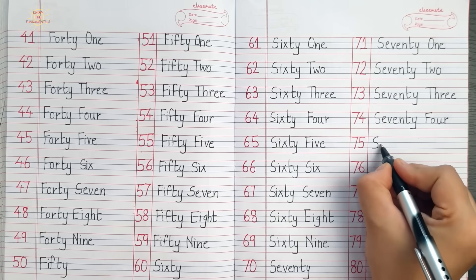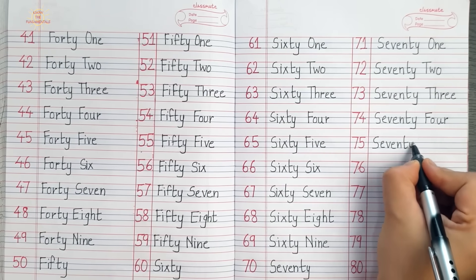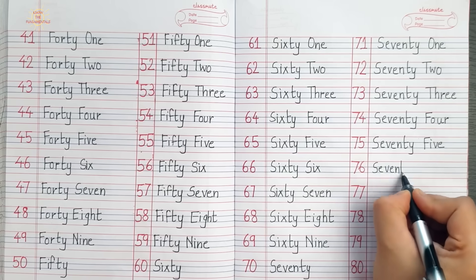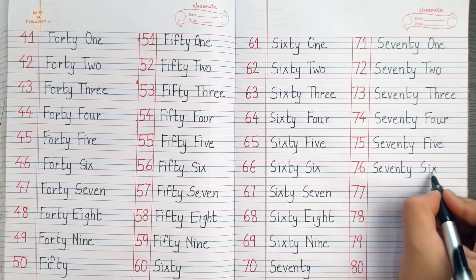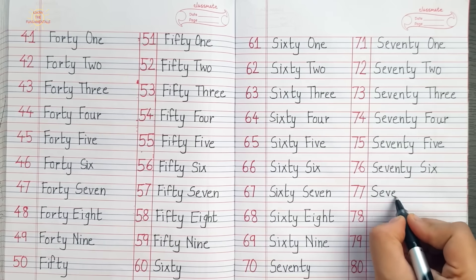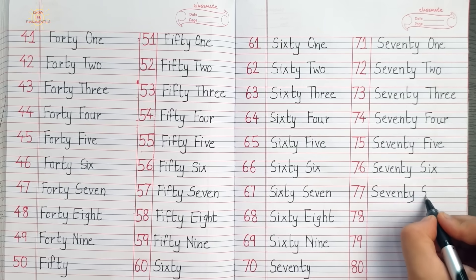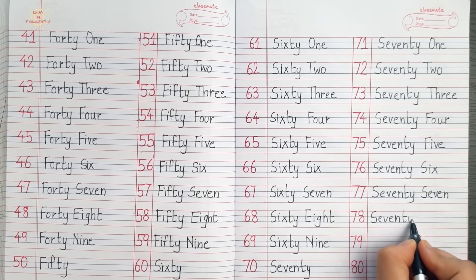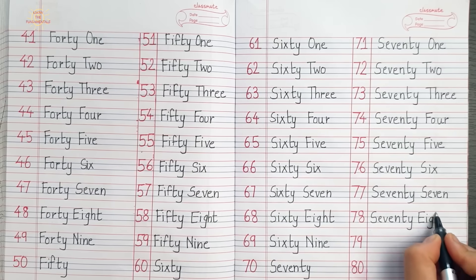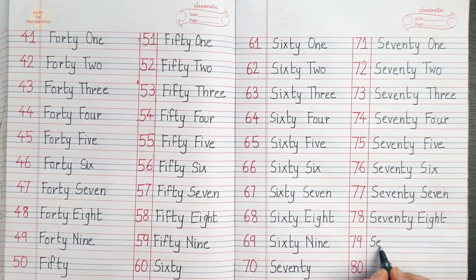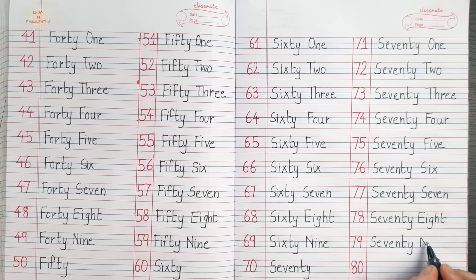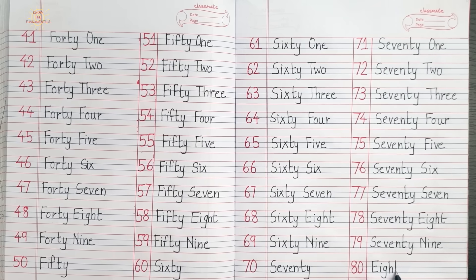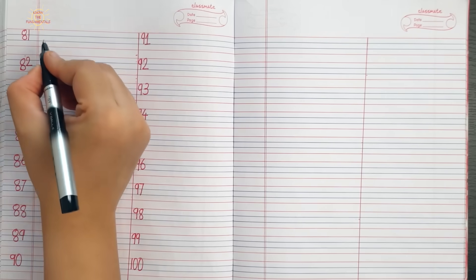75 - Seventy-five. 76 - Seventy-six. 77 - Seventy-seven. 78 - Seventy-eight. 79 - Seventy-nine. 80 - E-I-G-H-T-Y. 81 - Eighty-one.